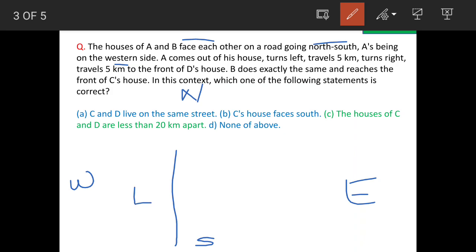A's house is on the west side of the road, so this is A's house. B is opposite because they are facing each other, so this is B's house.